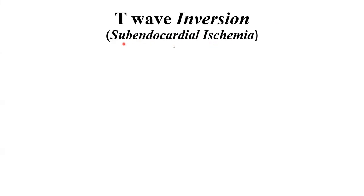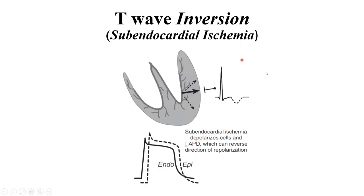First off is T-wave inversion. We will look at a scenario of sub-endocardial ischemia. This is the diagram — this arrow is the normal cardiac vector, the bold one. There are dotted lines which we'll explain in a bit. This is where the ischemia has occurred: the sub-endocardial surface. This is the nidus, the point of ischemia, and the ECG waves will get disturbed. The disturbance is picked up by this lead right here.